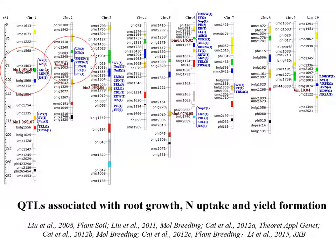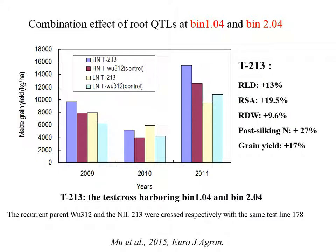With these populations we identified many QTLs encoding root growth and yield. Especially two loci on chromosome 1 and chromosome 2 made big contributions to root growth. Based on these two loci, we developed a line W213 that covers these two important loci and made a testcross with tester line 178. Over three years we compared root growth, nitrogen uptake, and grain yield with the recurrent parent control line 312.